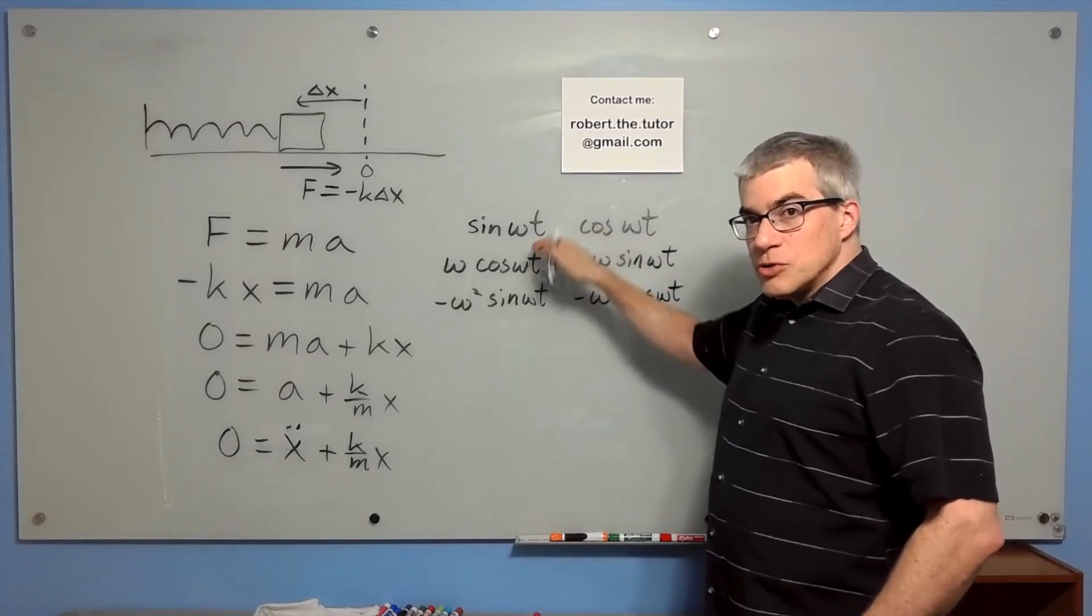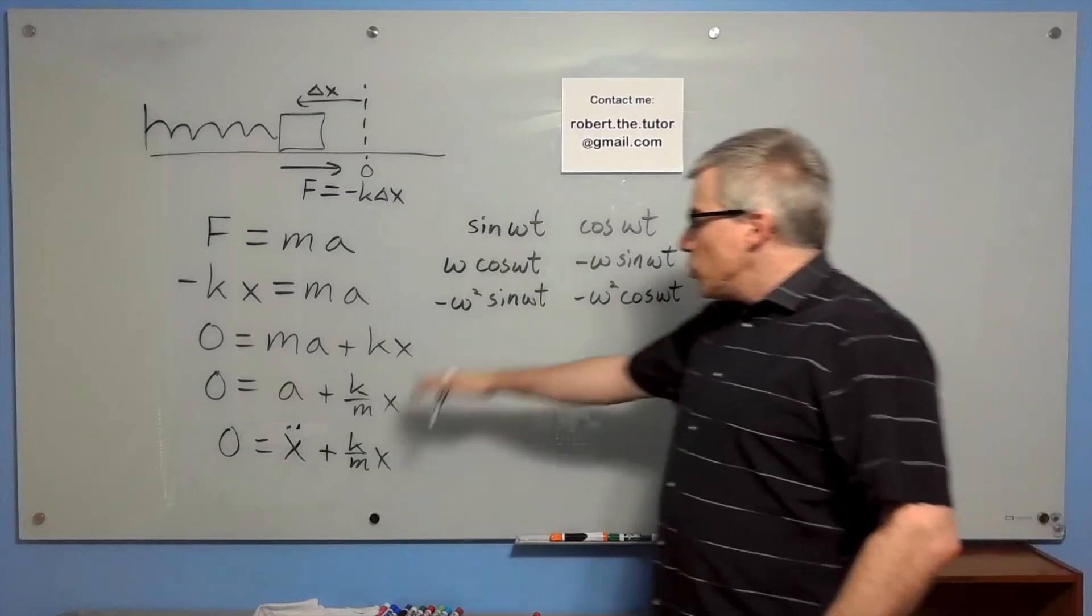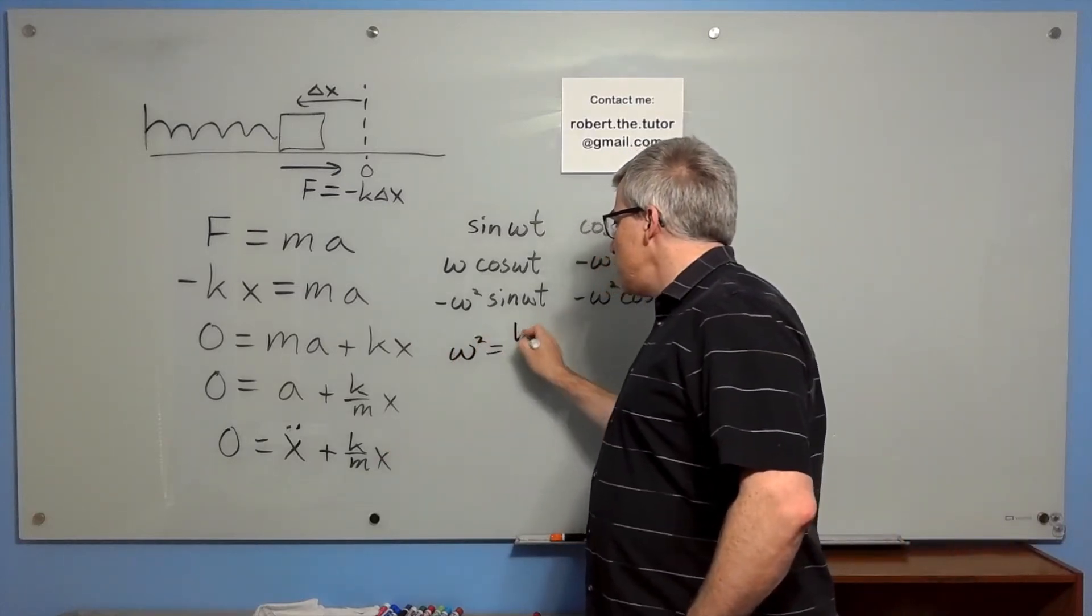It's negative proportional to what it was before. And this will work so long as omega squared is k over m.